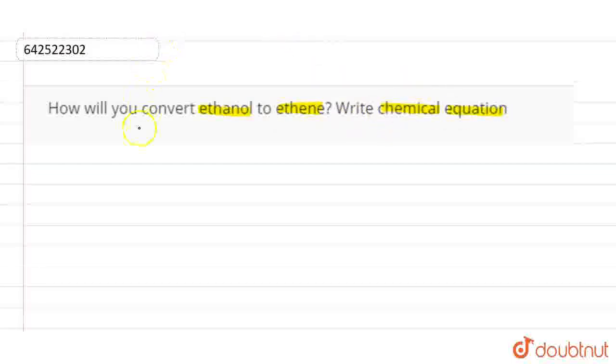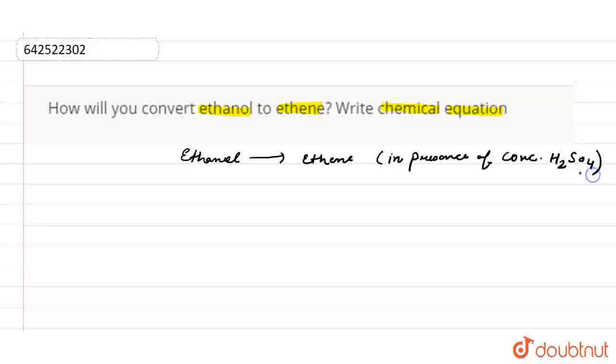So, we can convert ethanol to ethene in the presence of concentrated H2SO4. It can be done in presence of concentrated H2SO4, that is, sulfuric acid.